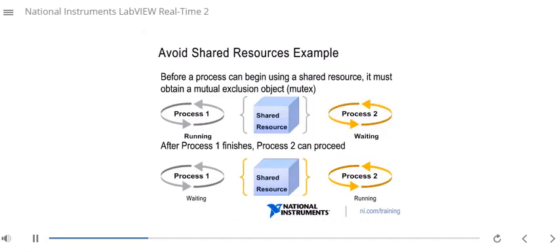One of the questions that we receive quite often is, why exactly is a shared resource a problem? The reason is before a process can begin using a shared resource, it first must get permission to do so. That's known as obtaining a mutual exclusion object or a mutex. Basically, that provides the permission to use. In this case, process one is running and accesses the shared resource. Process two is not allowed to get access to the mutex for that shared resource until process one finishes.